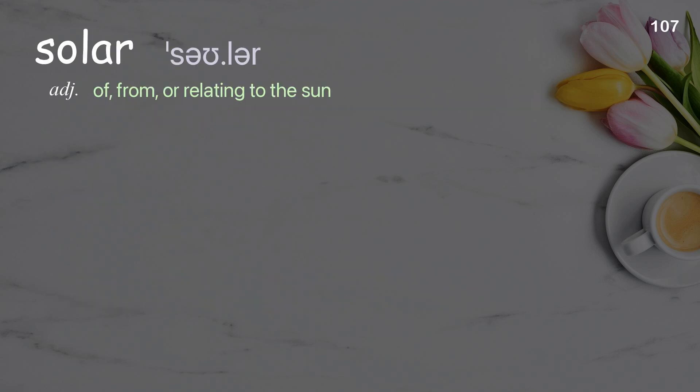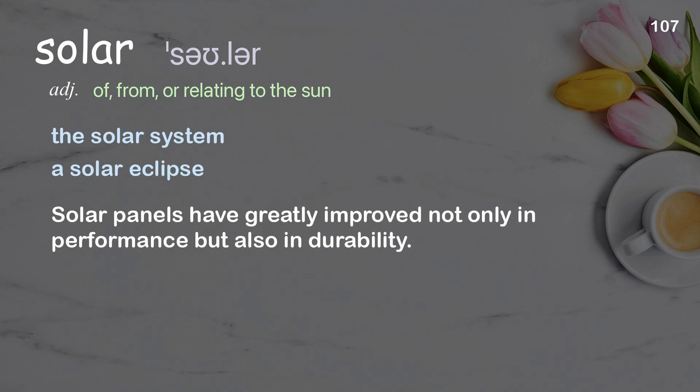Solar: of, from, or relating to the sun. Examples: the solar system, a solar eclipse. Solar panels have greatly improved not only in performance, but also in durability.